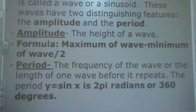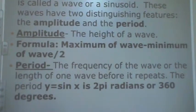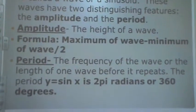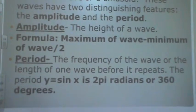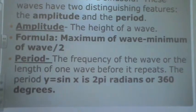To find the period, it is the frequency of the wave or the length of one wave before it repeats. The period of y equals sine of x is 2 pi radians or 360 degrees.